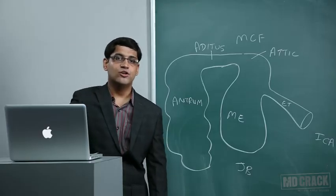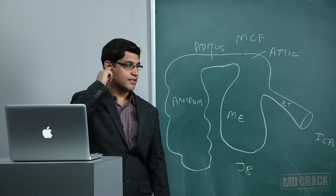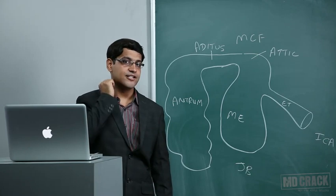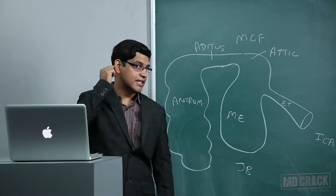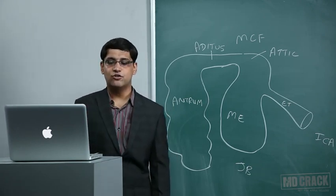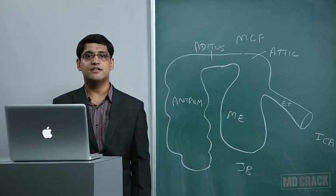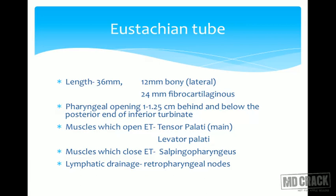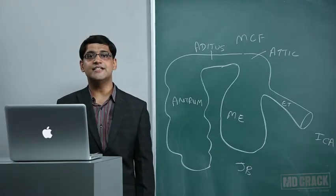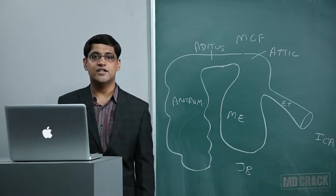The lymphatic drainage: the tragus drains into preauricular nodes, the lobule into infraauricular nodes, the rest of the pinna into postauricular nodes, and the whole middle ear and eustachian tube drain into retropharyngeal lymph nodes. In children, the eustachian tube is shorter, wider, and more horizontally placed than in adults, which is why infections from the pharynx and throat easily transmit into the middle ear, leading to recurrent middle ear infections.